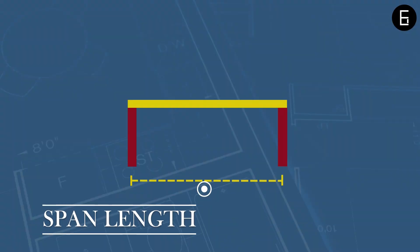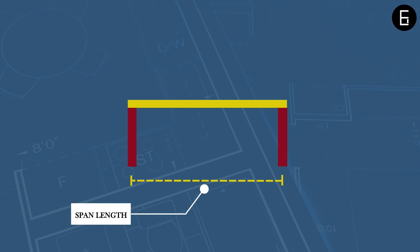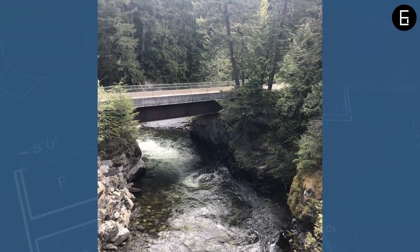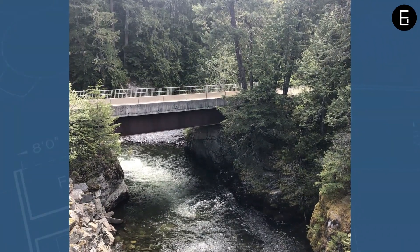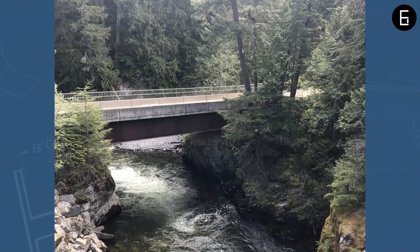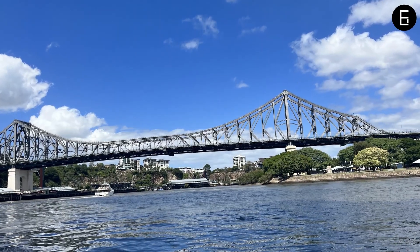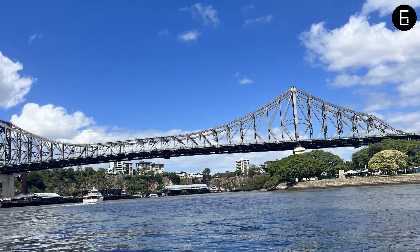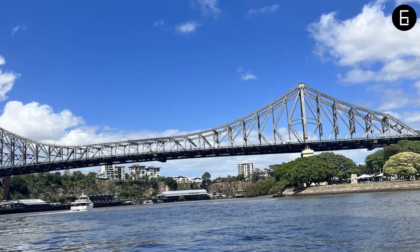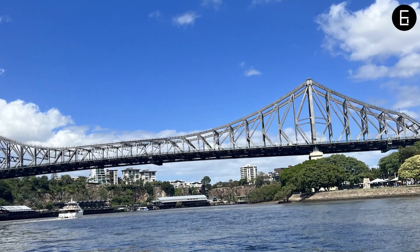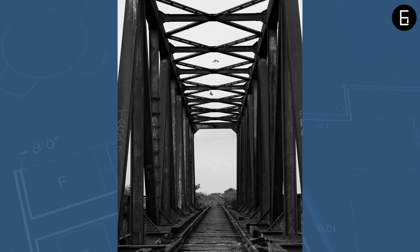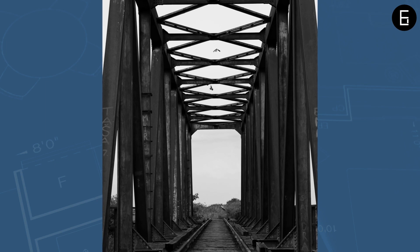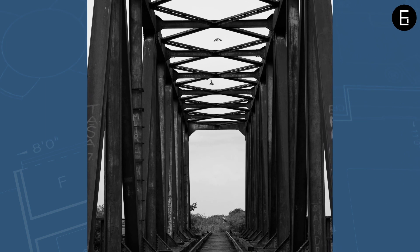The second attribute that can determine bridge shape is span length. The distance a bridge needs to cross plays a crucial role in determining the best-suited design. For shorter spans, like crossing a small stream or road, simple designs like beam bridges come into play — straightforward structures with horizontal beams supported by columns or piers. As span length increases, the challenges become more complex. Medium to long spans may call for truss bridges, which use diagonal elements to distribute load and provide additional stability, often seen on highways and railroads.